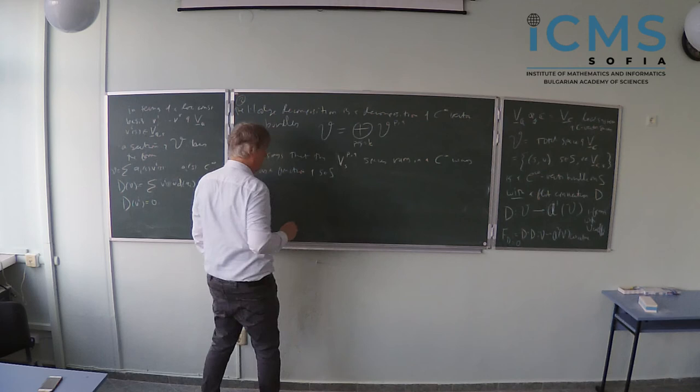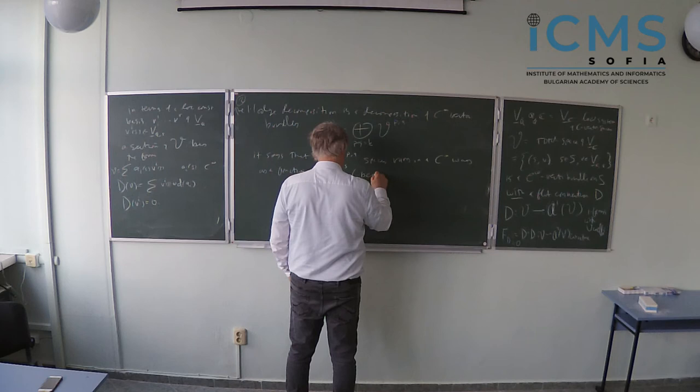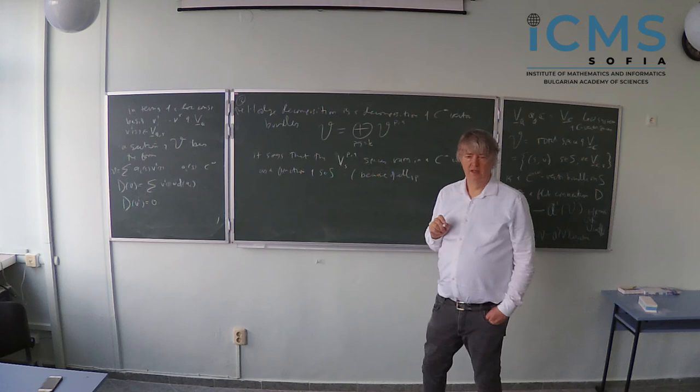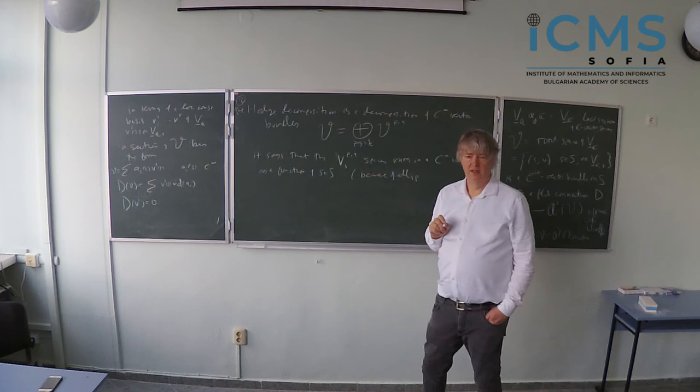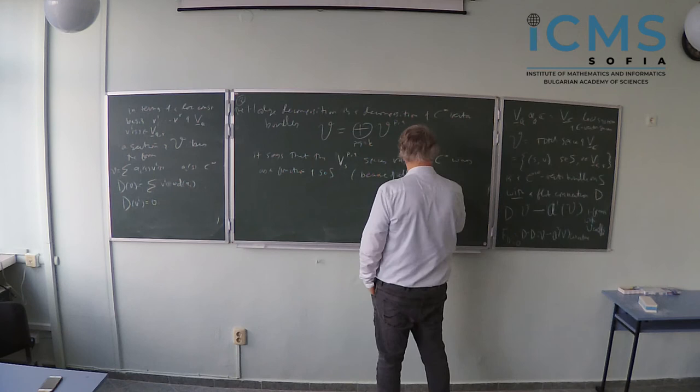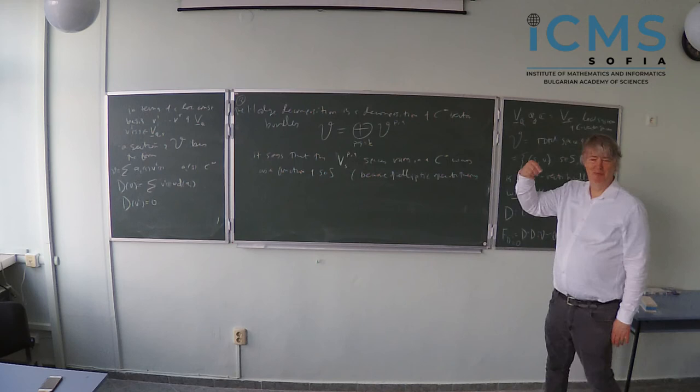So Property 2 — and these are properties proven by Griffiths, so even this part is not totally obvious, it comes from some elliptic operator theory — the Hodge decomposition is a decomposition of C∞ vector bundles: V = ⊕ V^{p,q} for p+q = K (K is the weight). It basically says that the V^{p,q} subspaces vary in a C∞ way as a function of S.